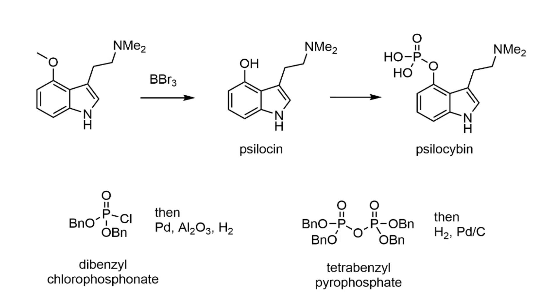The final step in the psilocin synthesis is removal of the methoxy group via treatment with boron tribromide to reveal the free hydroxy substituent.